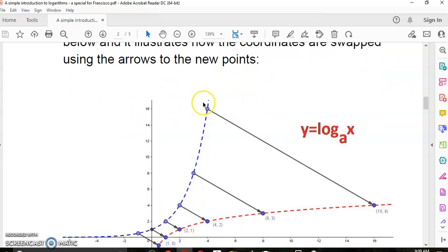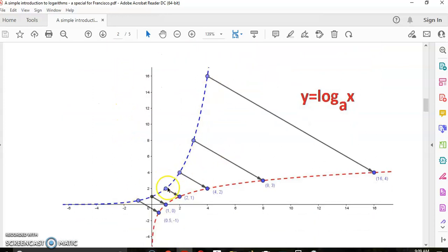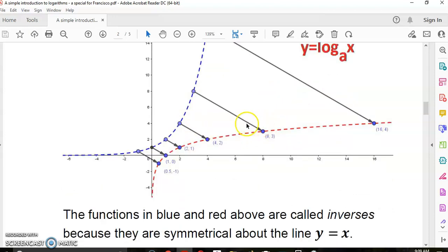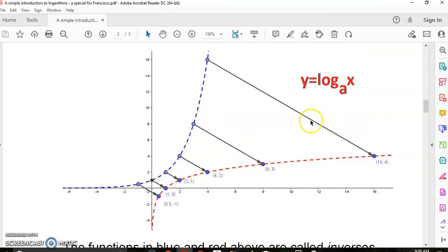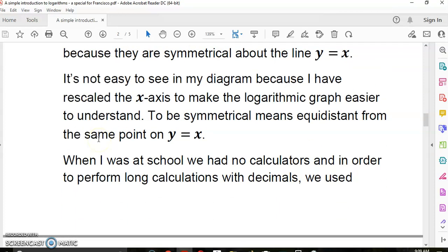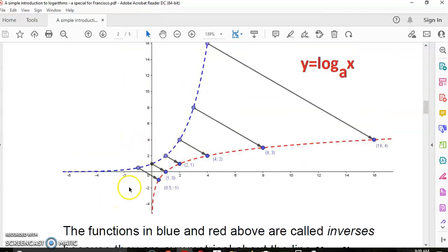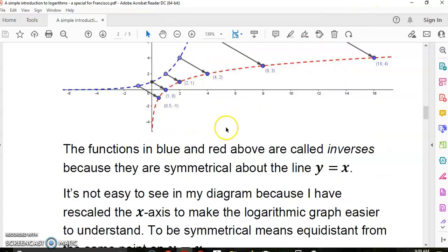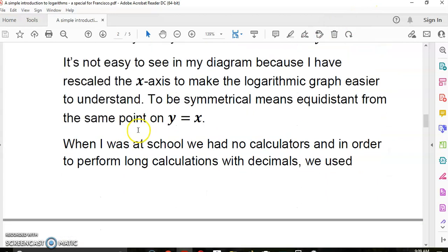The graph is shown below and it illustrates how the points are swapped. So here you've got these points going on to the logarithmic function. They're both symmetrical about the y-axis, and it might not seem like that's the case because I've rescaled my x-axis to make this a little easier to understand.